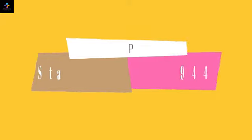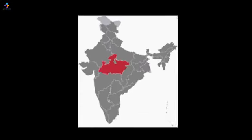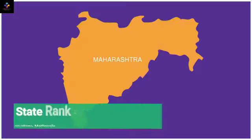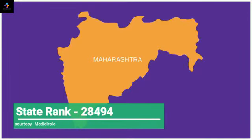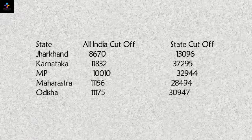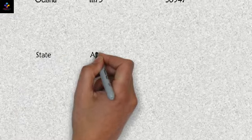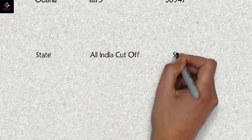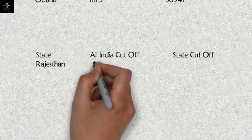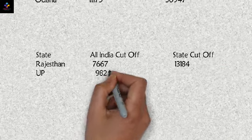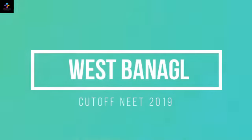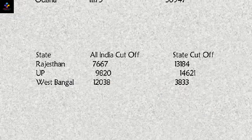Madhya Pradesh all India cutoff was 11010 whereas the state cutoff was 32944. Maharashtra had an all India cutoff of 1156 whereas state cutoff was 28494. Odisha had a cutoff of 11175 whereas the state cutoff was 30947. Rajasthan had all India cutoff 7667 whereas state cutoff was 13184. UP had all India cutoff 9820 whereas the state cutoff was 14621. West Bengal had cutoff of all India 12038 whereas the state cutoff was 3833.